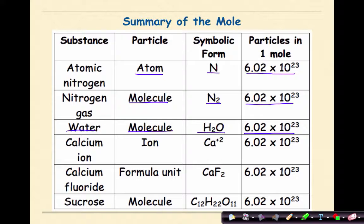A calcium ion, that's an ion with a symbolic form of Ca+2. And in one mole of calcium ions, I would have 6.02 times 10 to the 23rd ions.